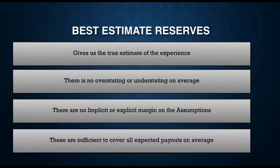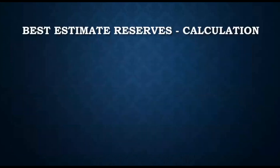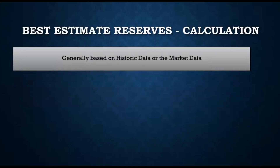Because we assume the future will turn out, on average, as expected, we assume that holding a reserve based on best estimate assumptions should be sufficient to cover all the expenses and claim payouts expected in the future. Best estimate assumptions are mainly driven by historic data and market data that is available.